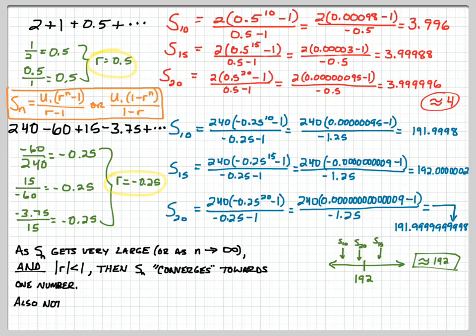But then we can say that S of N converges towards one specific number. Also, keep in mind this, that also notice that R of N in our formula, in our summation formula, what happens with that?